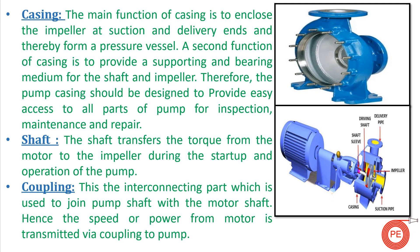The casing contains a rotating body which generates pressure to transmit fluid from one place to another. It also provides the bearing support and bearing medium for the shaft and impeller — everything rotating inside the pump is mounted within the casing. The pump casing should be designed to provide easy access to all parts of the pump so that maintenance can be performed whenever required.